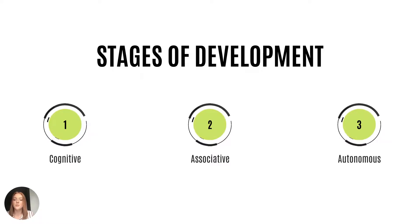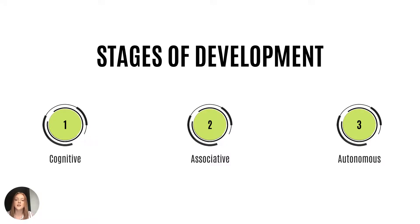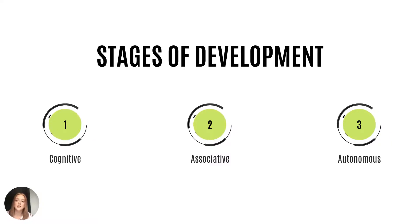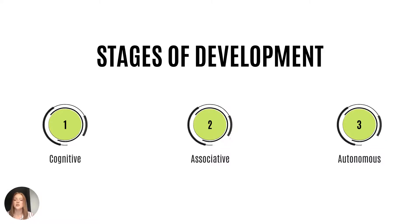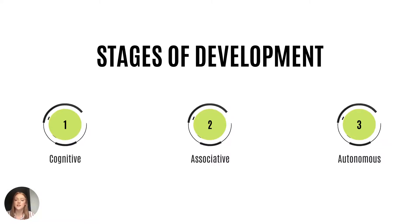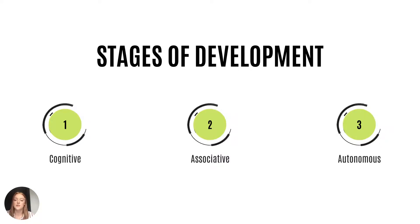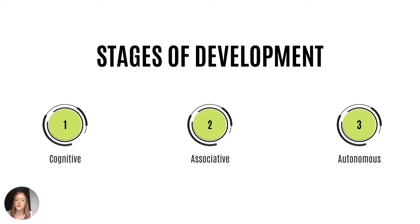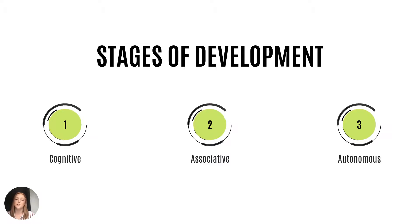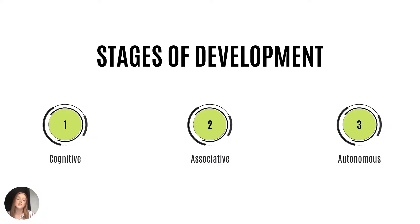Another important thing to have a basic understanding of are the stages of development. There are three stages consisting of cognitive, associative, and autonomous. The cognitive phase is the phase where the athlete has the least understanding of the skill and needs specific information to eventually be able to self-correct. Moving into the associative stage, there are less mistakes and the athlete should be able to recognize most errors and how to correct them.